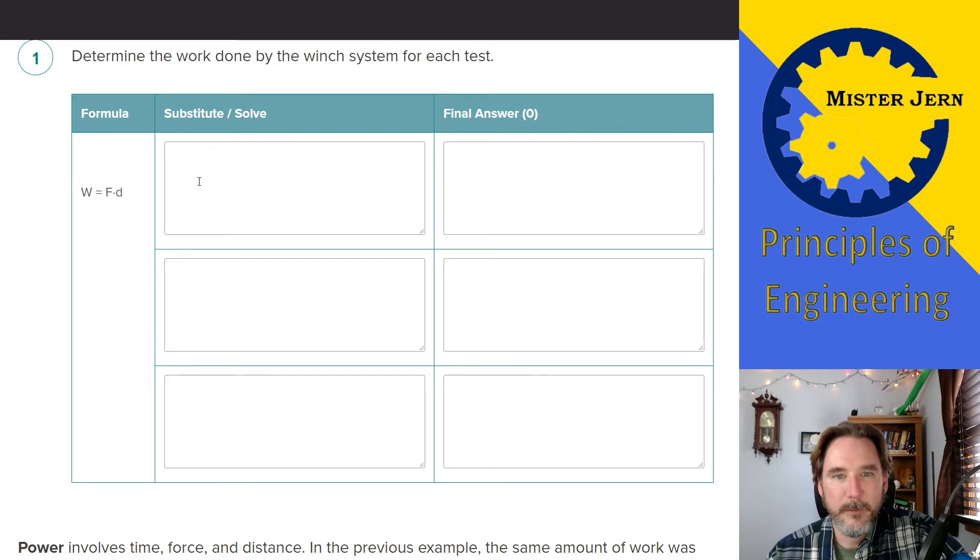You're going to write down, substitute, and solve. In other words, what is the force? What is the number? You're going to substitute the number for the force, substitute the distance, and you're going to actually calculate for work. Then you're going to write down the final answer here on the right-hand side. You're going to do that for all three tests. Just substitute and solve, and then the final answer. Make sure you show all those steps in your engineering notebook.